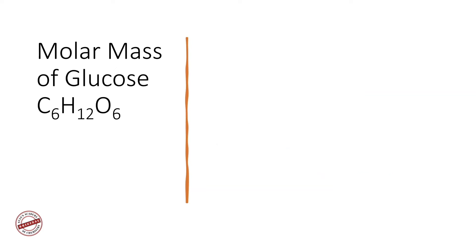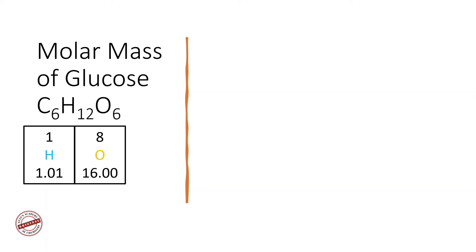Next, let's determine the molar mass of glucose. Glucose is C₆H₁₂O₆ — there are six carbon atoms, 12 hydrogens, and six oxygens. The relative atomic masses can be obtained from the periodic table: hydrogen is 1.01, oxygen is 16, and carbon is 12.01.